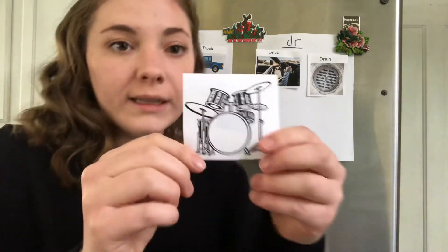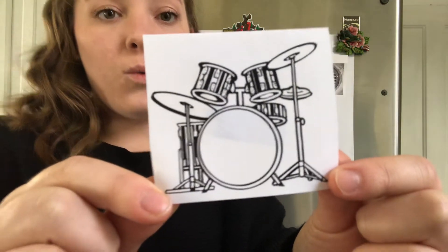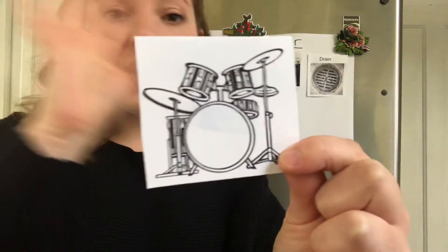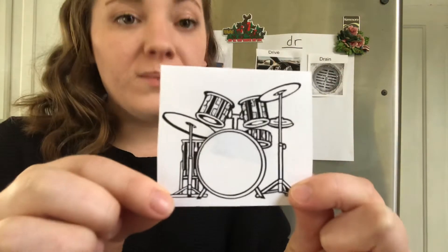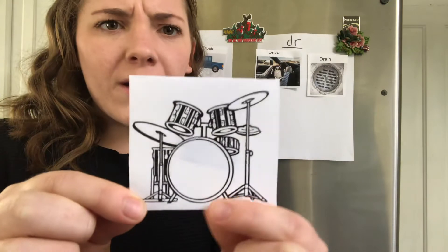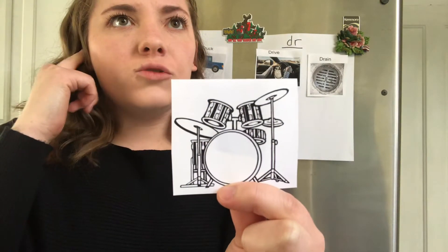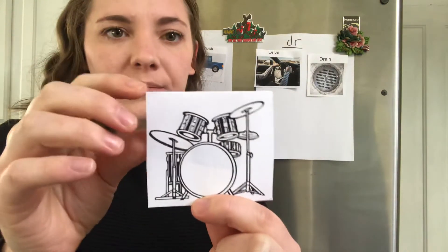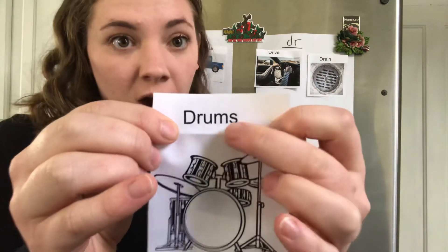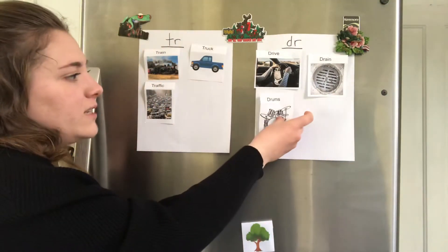Let's look at this one. This shows a drum set, so we're just gonna go with the word drums. What does drums begin with — T-R or D-R do you think? Say it in your head. Drums. You're right — D-R. Good. So we'll put that on the D-R side.